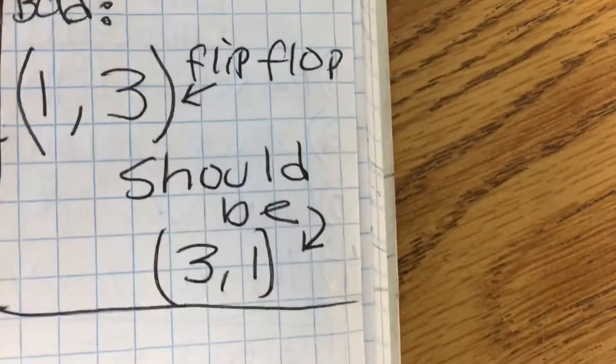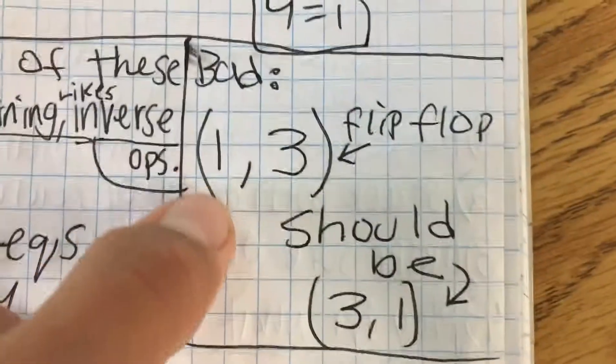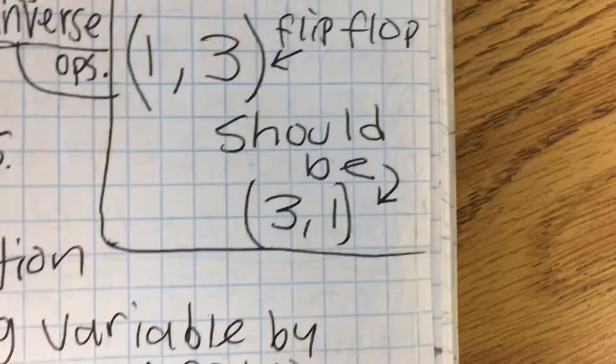So for a bad one, you write 1 comma 3, but it's 3 comma 1.